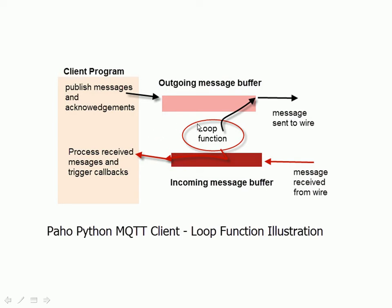The job of the loop function is to actually process the outgoing and the incoming message buffers. This loop function is running, and it periodically checks the incoming buffers and the outgoing buffers, and it processes the messages. On the incoming side, it analyzes the incoming messages and it looks at the message type. It could be a connection-acknowledge message, it could be a disconnect-acknowledge message, it could be a publish-acknowledge message. And it analyzes that, and depending on the message it sees, it calls a callback, or it triggers an appropriate callback.